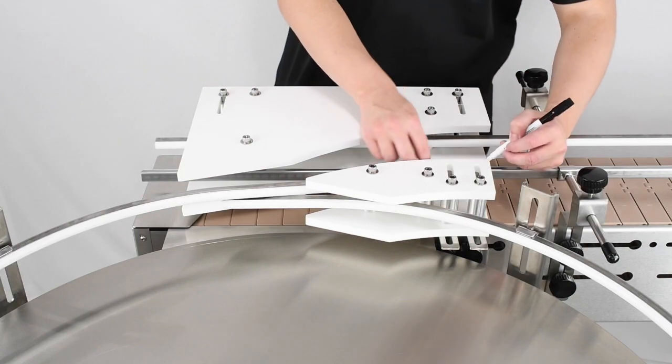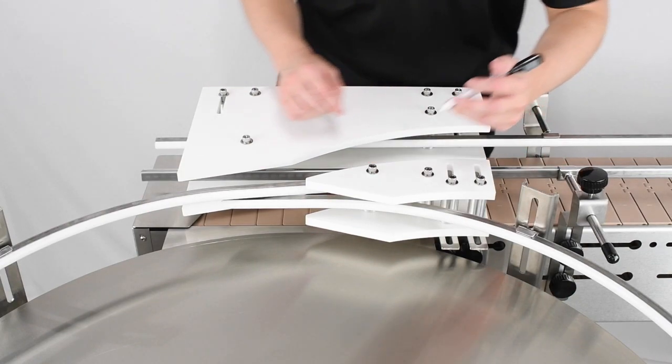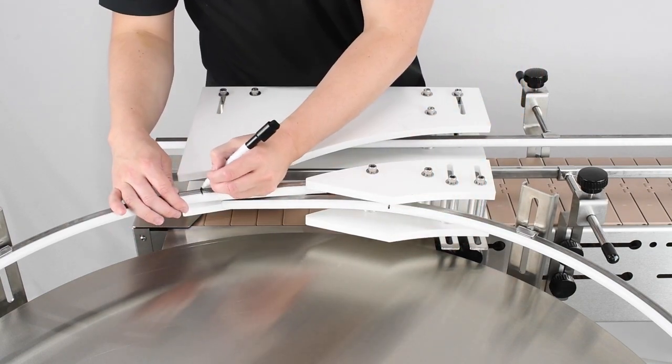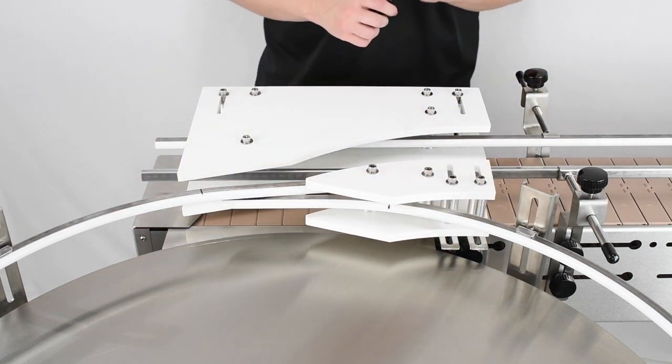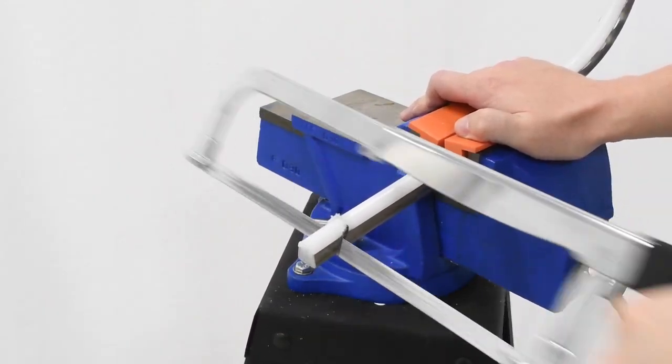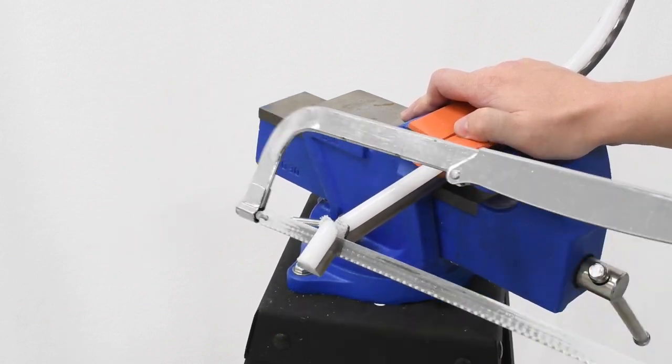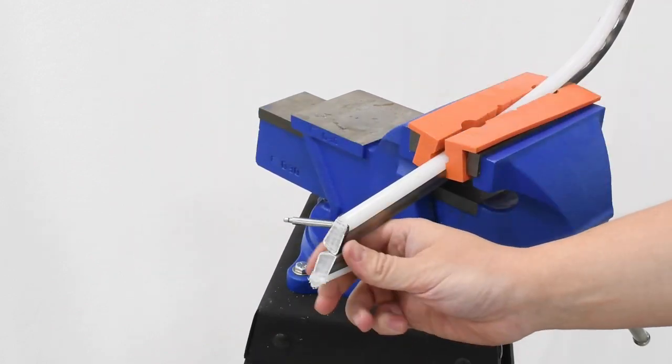Mark your guide rails to cut them at the points where they run through the adjustable gate system. The conveyor guide rail furthest from the table does not need to be modified. Cut the guide rails that need cutting with a vise and a hacksaw. Cut using precise and clean strokes along your marks.